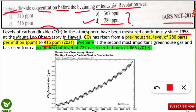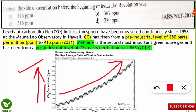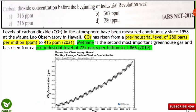Methane, the second most important greenhouse gas, has risen from its pre-industrial level of 722 parts per billion (ppb). As per the 2019 report, the ppb of methane is now 1866. This graph shows how the Mauna Loa Observatory measures CO2 levels since 1958 — the y-axis shows CO2 concentration in parts per million and the x-axis shows the years, indicating a rapid increase. Please note down these values.